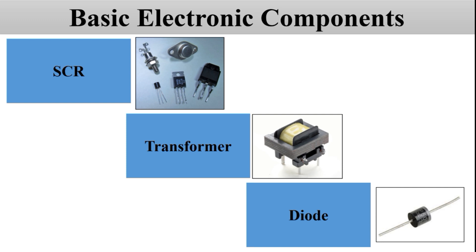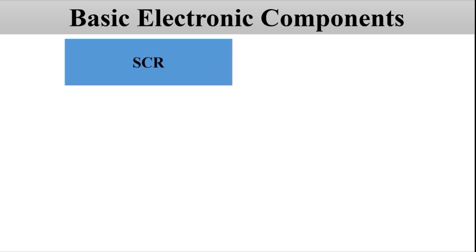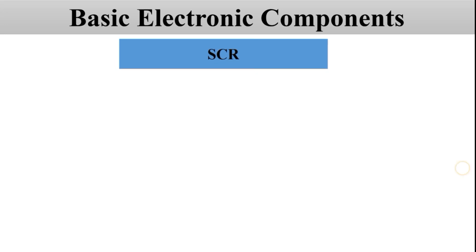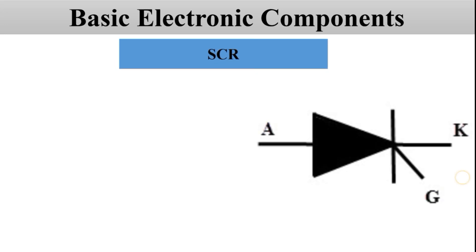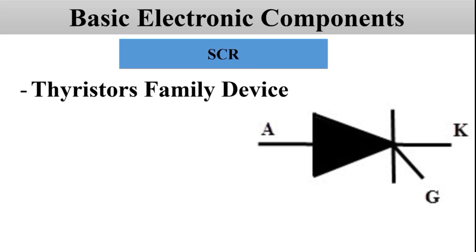Let's get started. The first component is SCR. This device belongs to the thyristor family. Along with SCR, there are other thyristor family devices like LASCR, GTO, TRIAC, MOSFET, UJT, DIAC, etc. Let's learn about SCR.